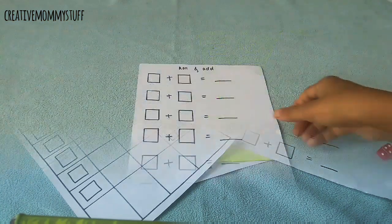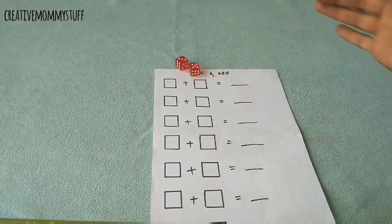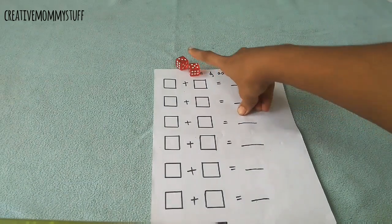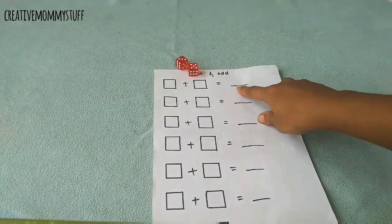First activity here is roll and add. We have two dice, so we will just throw the dice like this, and three, six, five. So here she will write three here, five, and three plus five is eight.